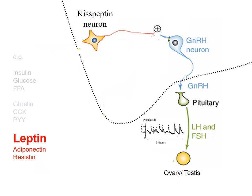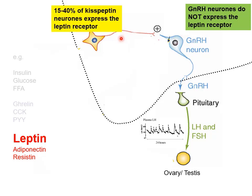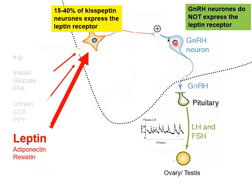Where is leptin acting? We know the system works with kisspeptin neurons feeding into the GnRH neurons, driving GnRH and thus the ovaries and testes. The GnRH neurons themselves don't express the leptin receptor, so leptin can't be acting on them. But a population of kisspeptin neurons do express the leptin receptor, suggesting the working model that leptin works on kisspeptin neurons, which then drive GnRH.